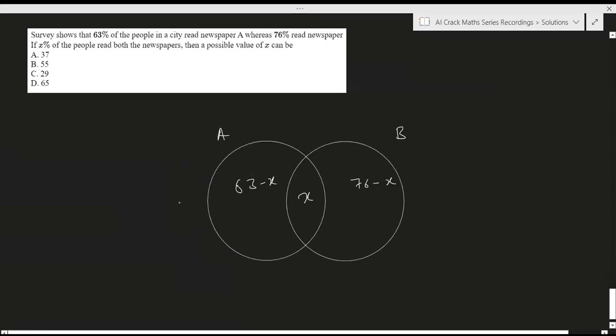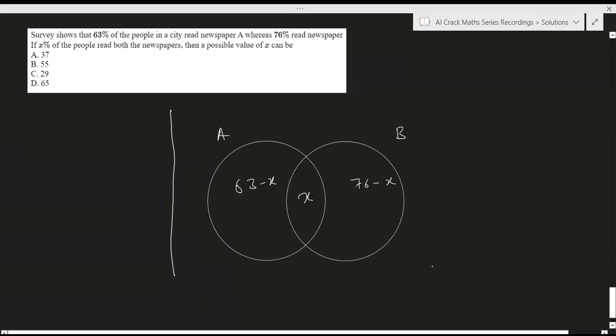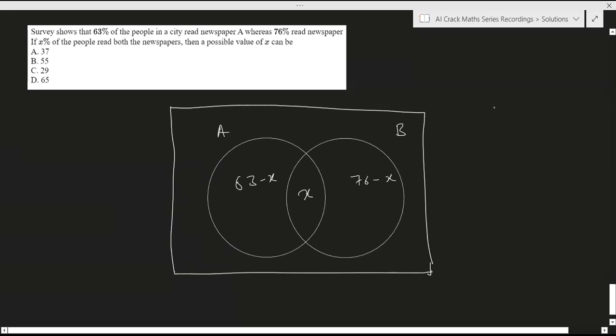Now we haven't been given that this is enclosed in a universal set or not, so we'll have to assume it. So our basic understanding says that 63 minus X plus X plus 76 minus X should be less than 100, right, because there could have been some value which we don't know about the universal set. So we cannot really say that this summation is 100%.